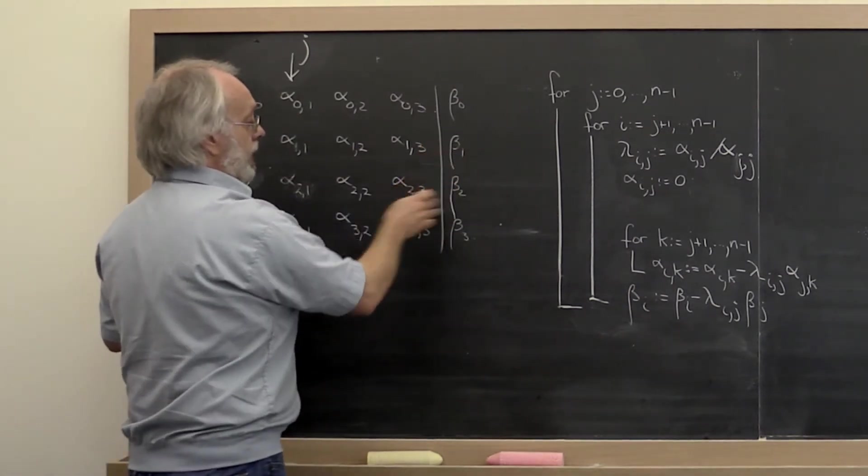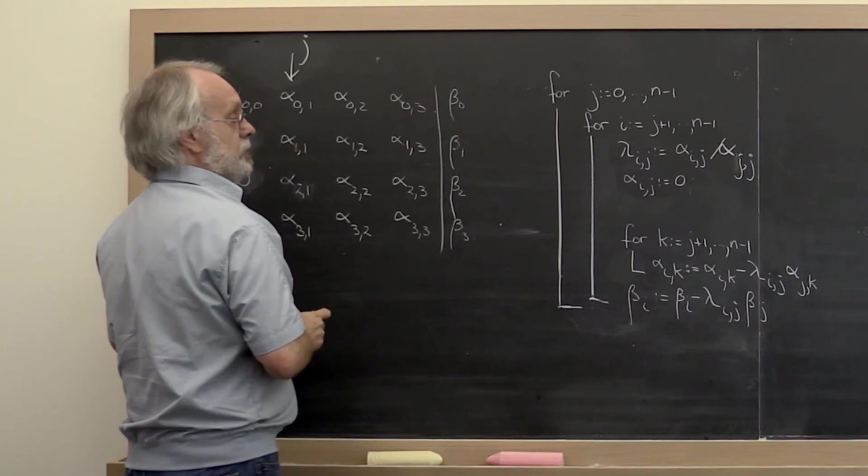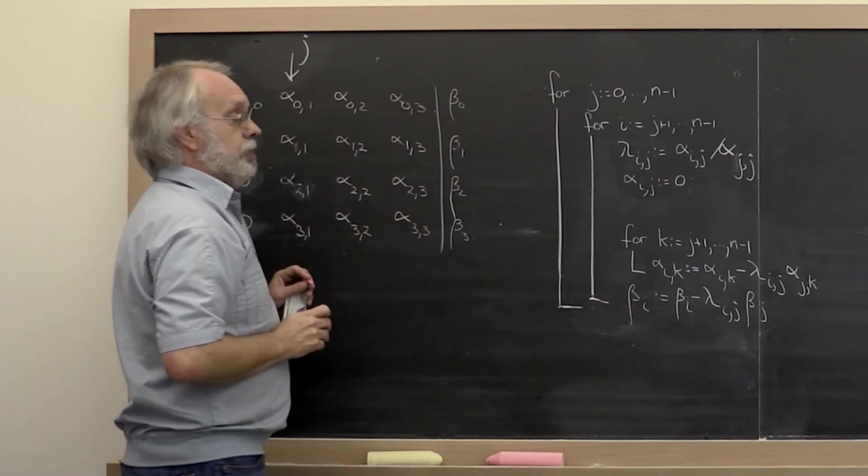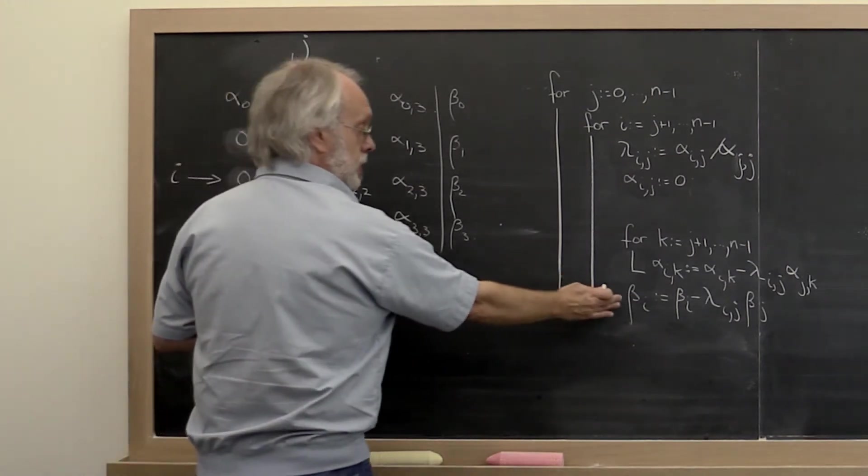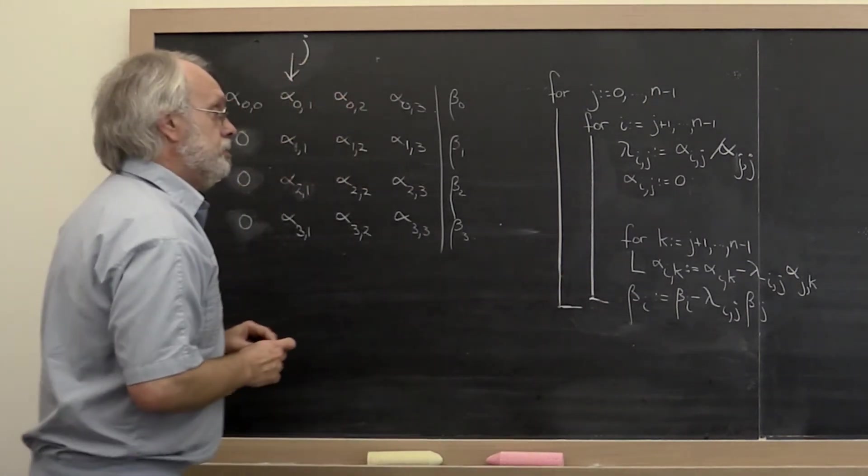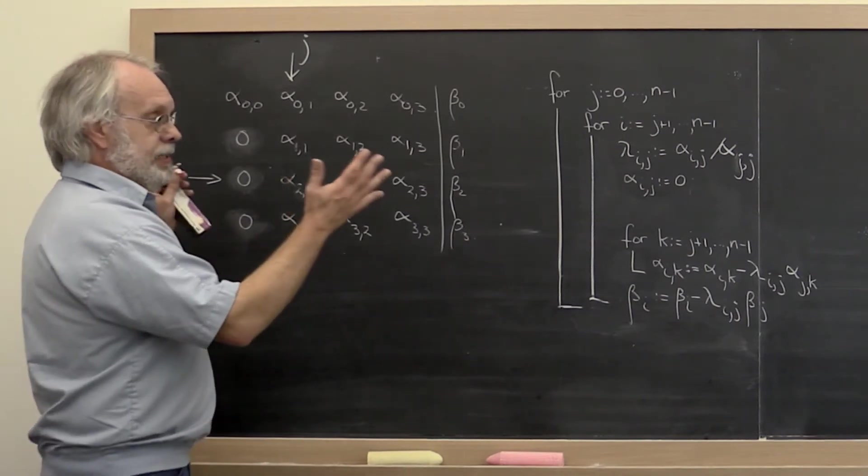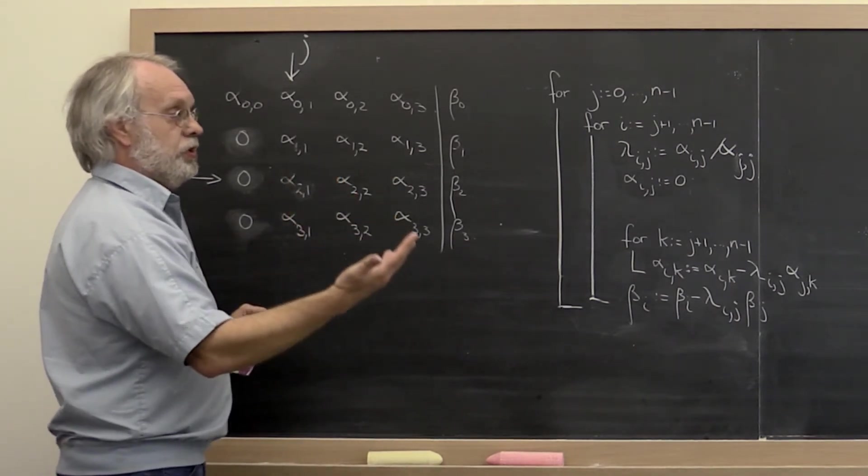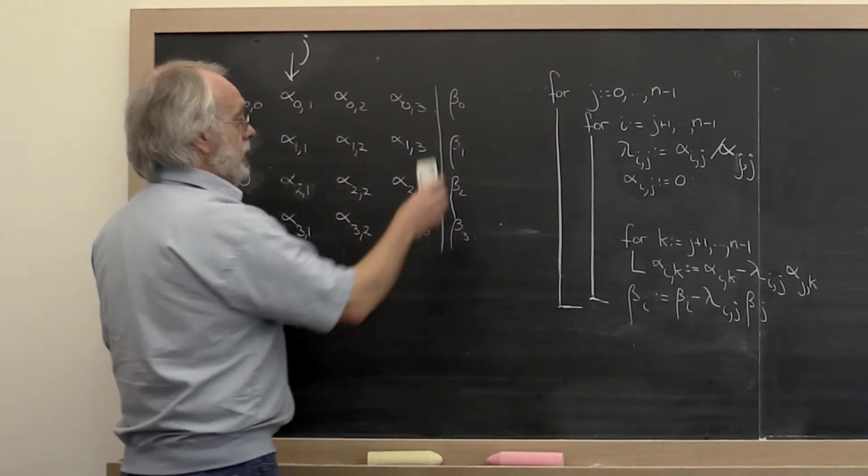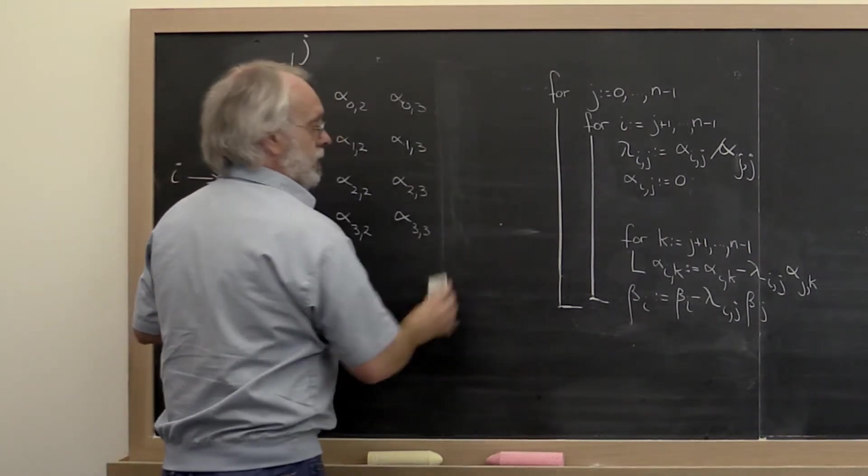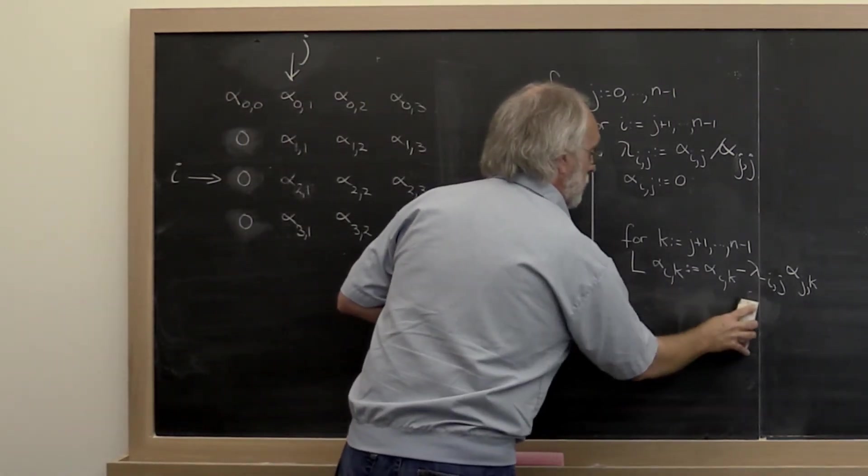When we get to the right-hand side, we take the multiplier, multiply it times the Jth entry there, and subtract it off of the Ith entry there. That's what this statement right here does. Now we're going to relate this process to the computation of the LU factorization, and therefore we're not really interested in the right-hand side. I'm just going to take this out right now.